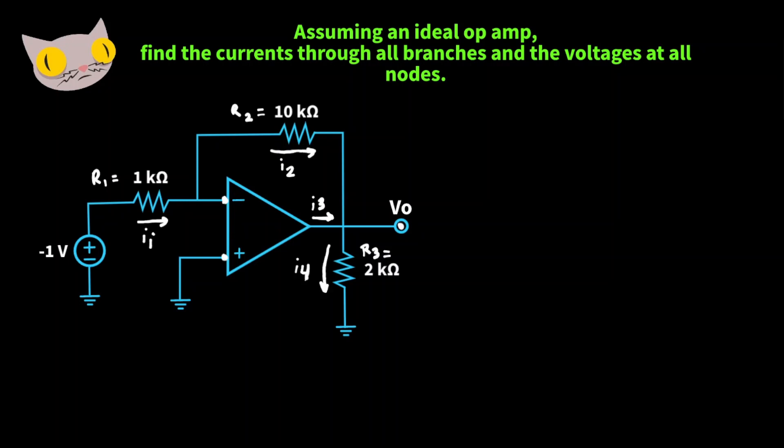The currents we're going to be trying to find are I1 here, I2 here, I3 here, and I4 here. And the node voltages are here at the terminals of the op amp and here for the output voltage.